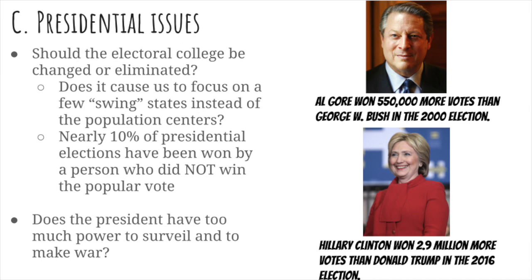Al Gore won about a half a million more votes than George W. Bush, yet Bush became president and served two terms. Hillary Clinton actually won 2.9 million more votes than Donald Trump in the 2016 election, yet Trump won the presidency. Another issue associated with the presidency is whether the president has too much power to surveil and to make war — questions that exist in the wake of Vietnam, the war on terror, drone attacks, the wars in Iraq and Afghanistan, the Patriot Act, and enhanced interrogation techniques, all related to the imperial presidency.